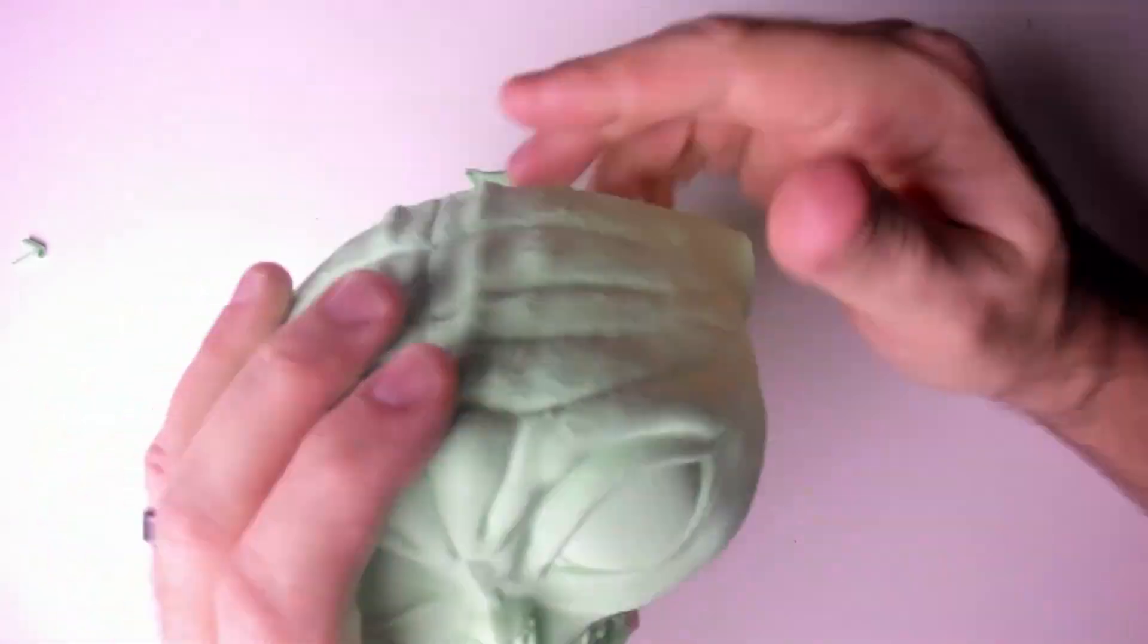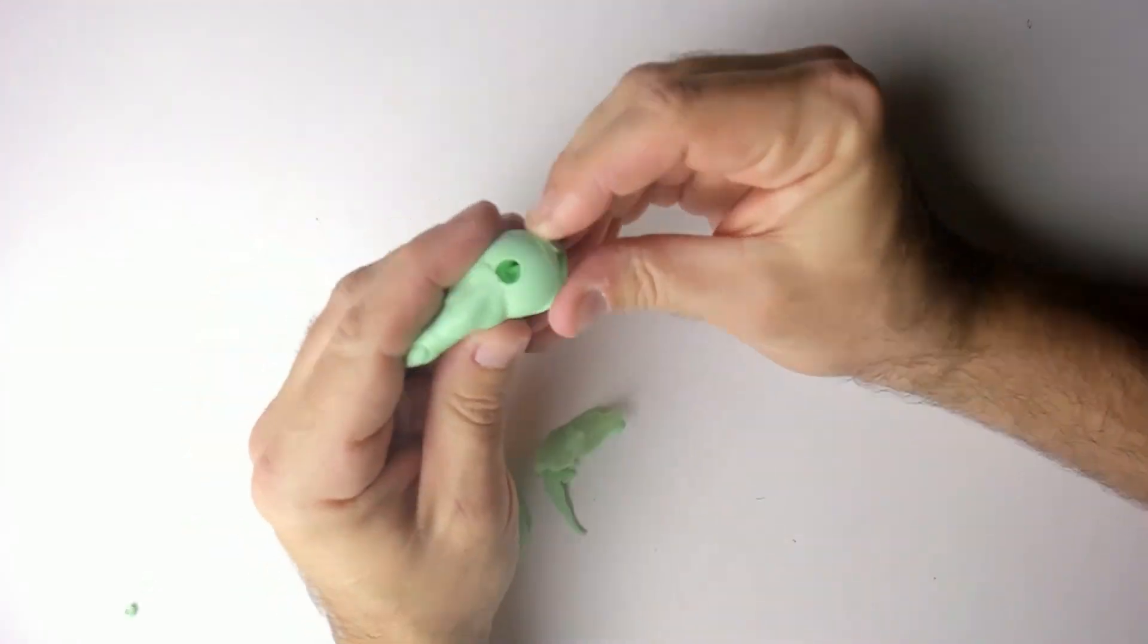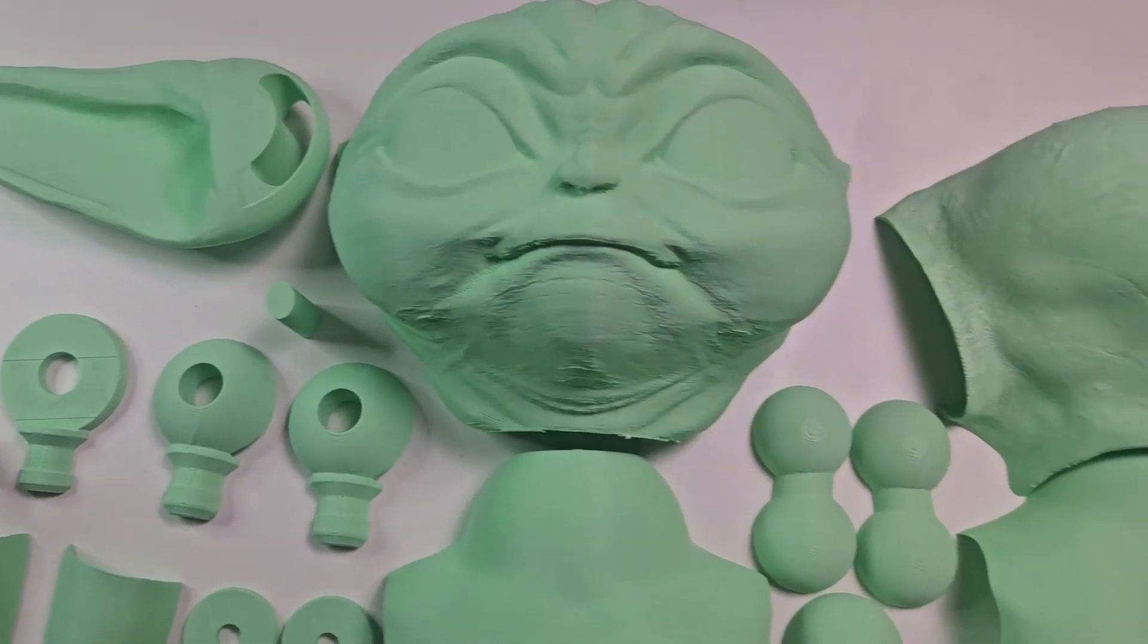After everything is printed, I remove all of the supports. Besides most of the joint pieces, everything needed supports. Here are all the parts ready for assembly.